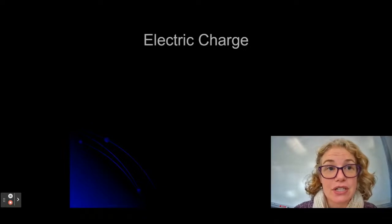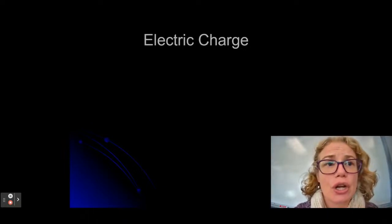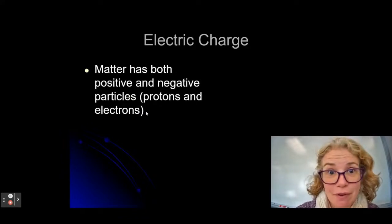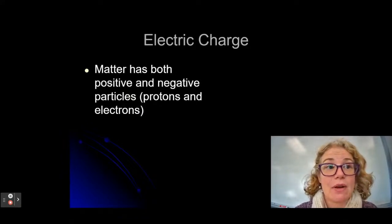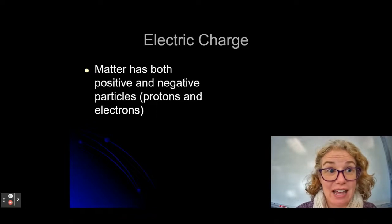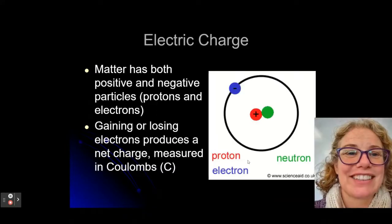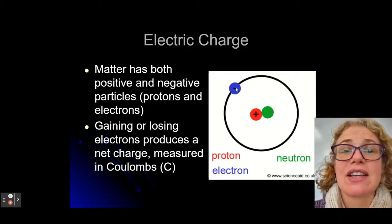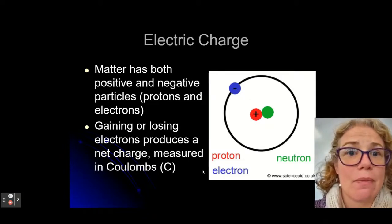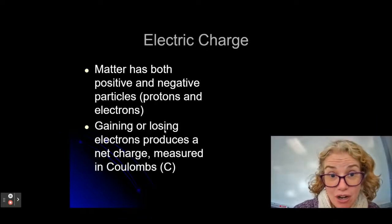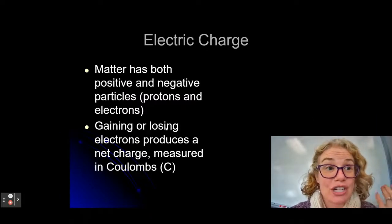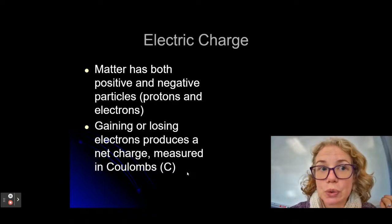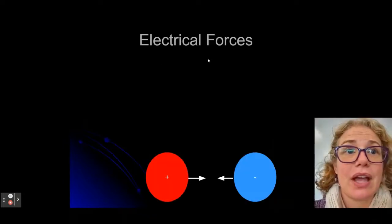So in order to understand static electricity, we have to understand the basics of what is an electric charge. Electric charge is going to come from atoms. Atoms are made up of both positive and negative charges. So here's an image of the atom, and we can see that here's positive protons and negative electrons. That's where the electric charges come from. And we can actually measure the amount of charge an object has in coulombs.